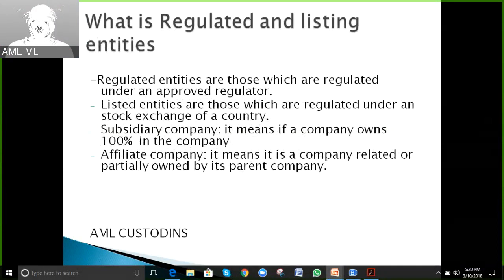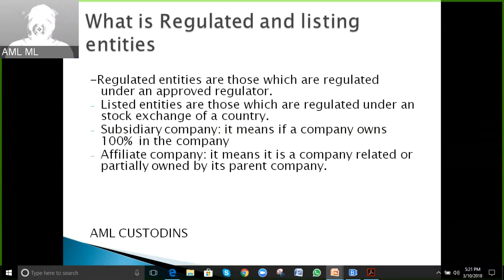In KYC you may come across regulated entities and listed entities. Regulated entities are those regulated under an approved regulator — for example, in the US, Microsoft is registered with the Securities and Exchange Commission, making it a regulated entity. If it is registered under an approved stock exchange, it is a listed entity. A subsidiary company is one where a parent company owns 100% — for example, if Microsoft owns 100% of Google, then Google is the subsidiary. An affiliate company is an entity that is partially owned by its parent company.